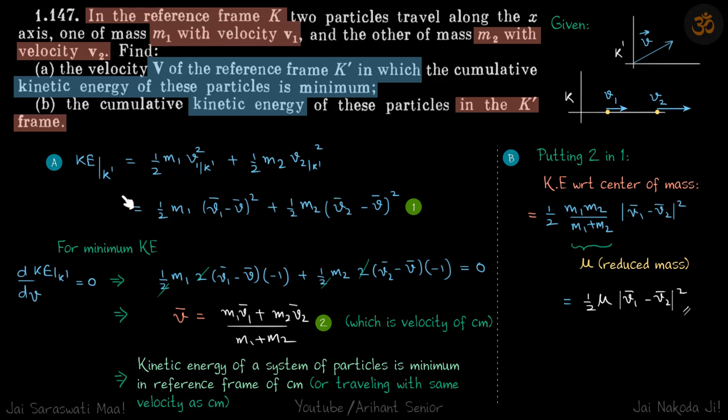For minimum kinetic energy, d KE by dv should be zero. When we do that, we get v as m1 v1 vector plus m2 v2 vector divided by m1 plus m2.